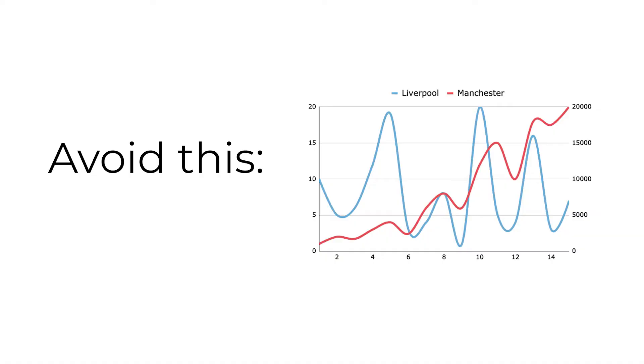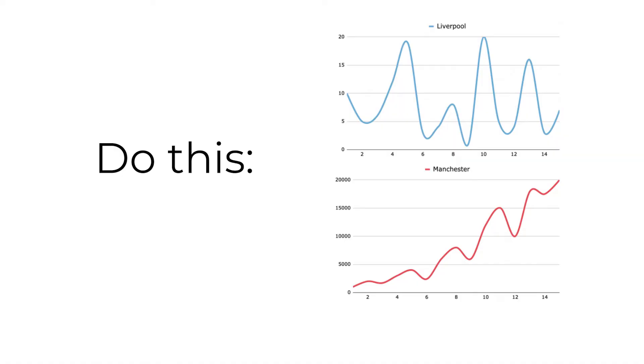Number three: avoid those messy dual axis charts where you can. It takes a reader far too long to center themselves — they're trying to figure out which line is which and what relates to what. Separate them into two small charts. It takes the same space, but trends or anomalies are much easier to spot.